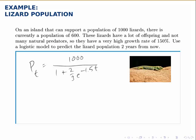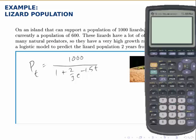Now, to predict the population in two years, we simply let t equal 2, and using the calculator, we'll start by simplifying the denominator. So first, multiply negative 1.5 times 2 for t, raise e to that answer,